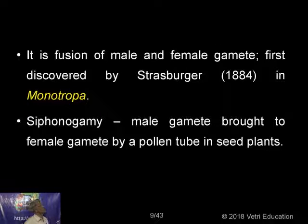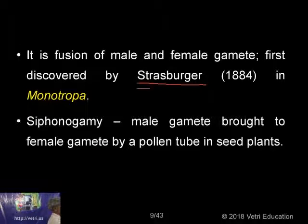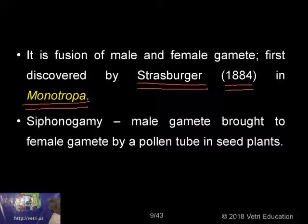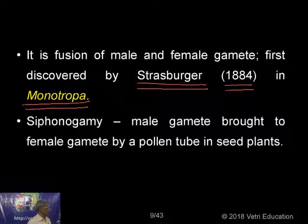The fusion of a male and a female gamete was first discovered by Strasburger. Fertilization was first described by Strasburger in the year 1884 in a plant called Monotropa. Siphonogamy refers to the male gamete being brought to the female gamete by the pollen tube in seed plants. Siphonogamy is an important step in evolution.